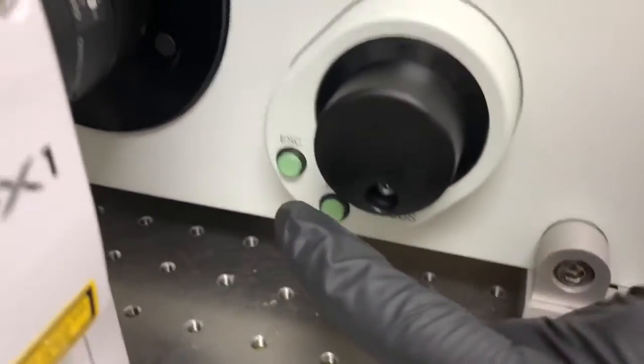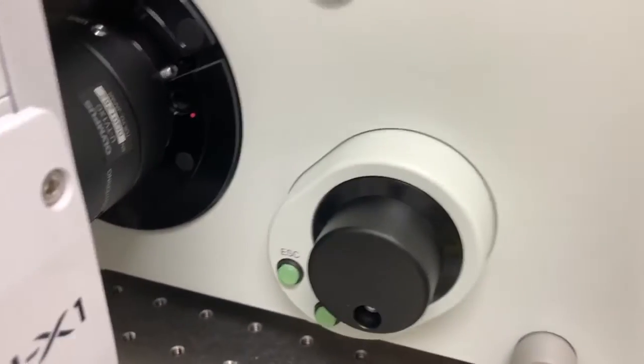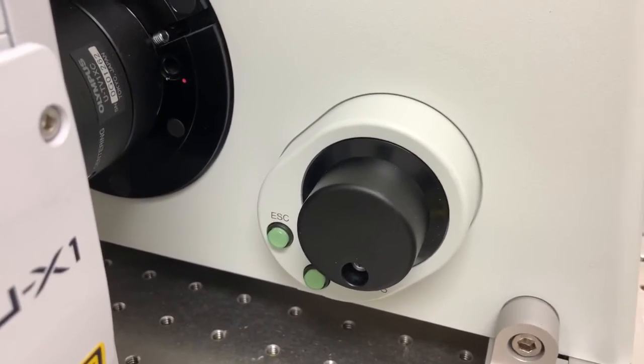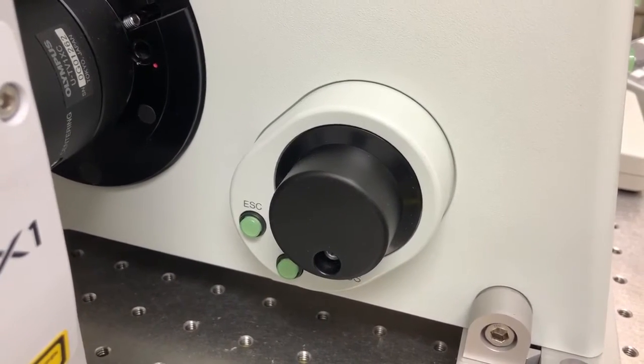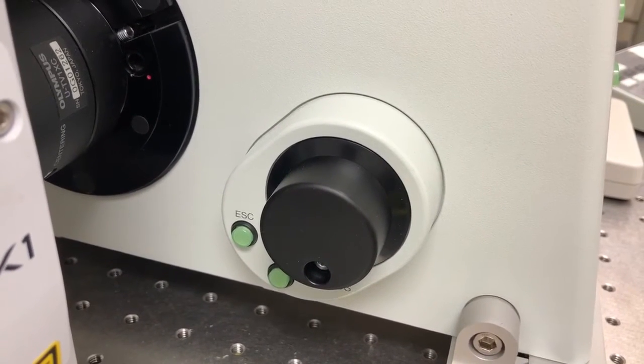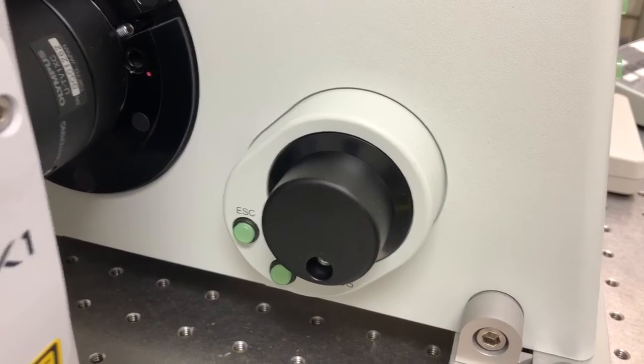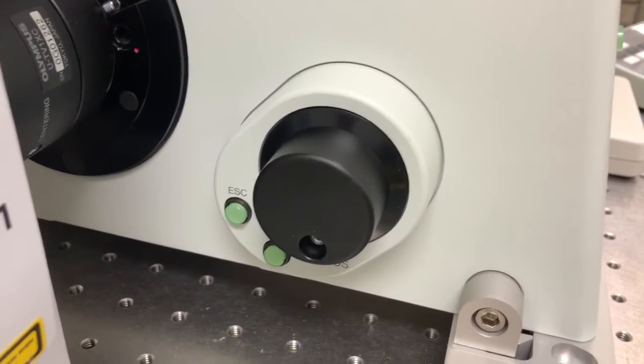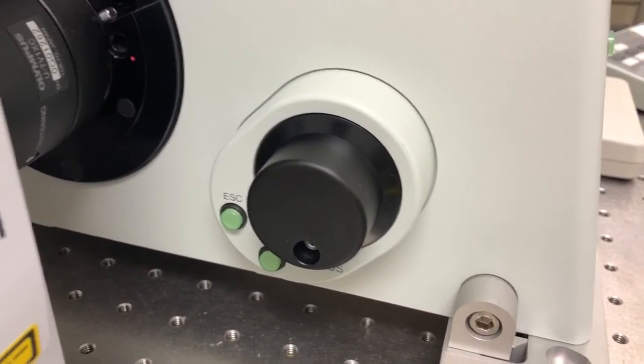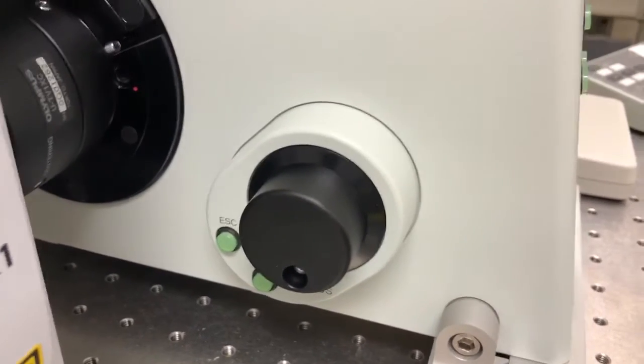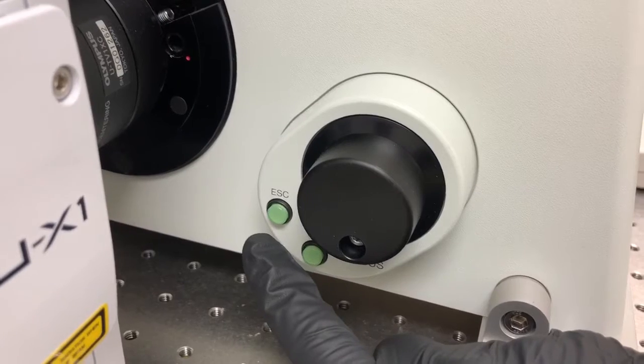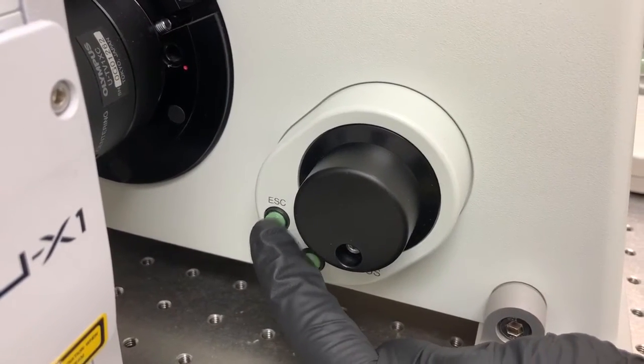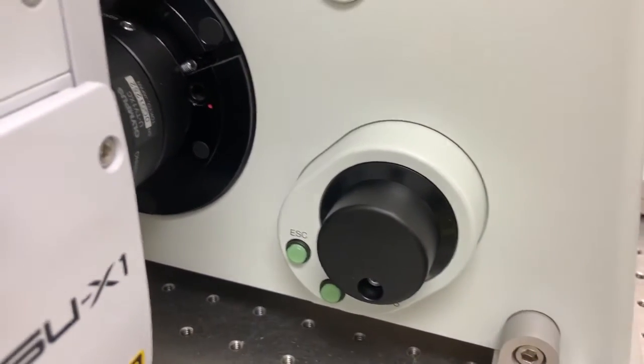The other button is called escape. And so what this button allows us to do is to retract the objective, pull it down to a position where it's far from the sample so that we can put samples on or off, put on oil, remove oil without having a risk of scratching the objective against the sample. The way that setting works is we hit escape, it retracts. And if we hit escape again, it goes right back up to exactly where it was.